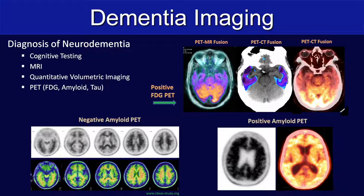This is an example of a positive FDG PET. The PET-MR fusion is on the left, the PET-CT fusion is in the middle and on the right. Down in the lower right-hand corner, we have a positive amyloid PET — you see diffuse binding of the tracer to the cortex throughout. On the left side here is a negative amyloid PET for reference, and you see the cortex looks light with no binding there.